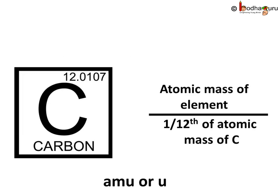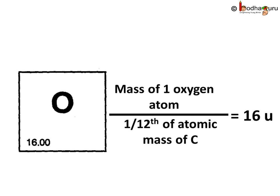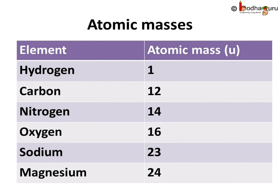Earlier, it was expressed in AMU or atomic mass unit. But now, it is expressed as U, i.e. unified mass. The atomic mass of oxygen is 16U, means an atom of oxygen is almost 16 times heavier than one-twelfth part of atomic mass of carbon-12. The atomic masses of some common elements are as follows.